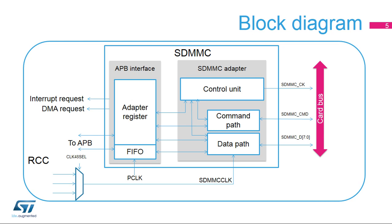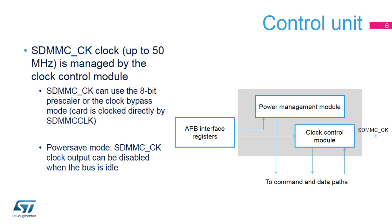Two clocks are available for the SDMMC controller: the APB clock (PCLK) for the APB interface, and the SDMMC clock (SDMMC-CLK) for the SDMMC adapter. The SDMMC adapter includes a control unit containing a power management module and a clock control module with the clock divider for the card clock, SDMMC-CK. The clock control module provides an 8-bit prescaler for SDMMC-CK clock generation, allowing it to generate a clock equal to 1/1 SDMMC-CLK. It also provides a bypass mode for communications up to 50 MHz.